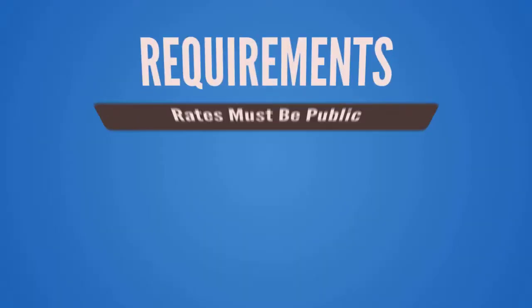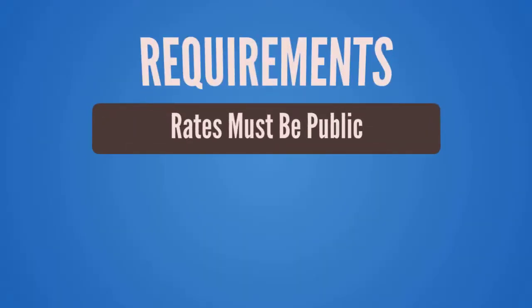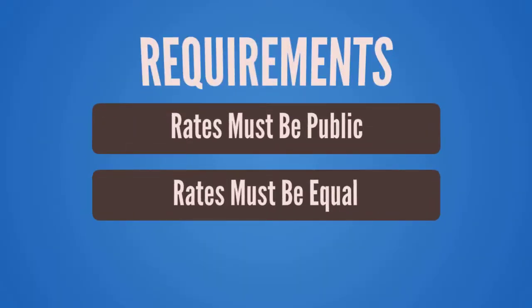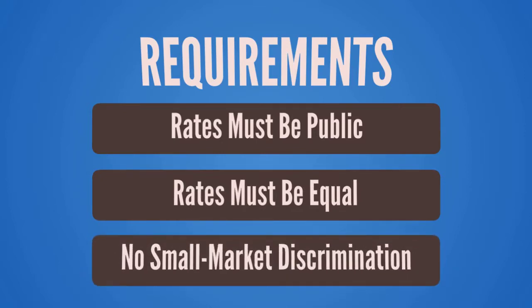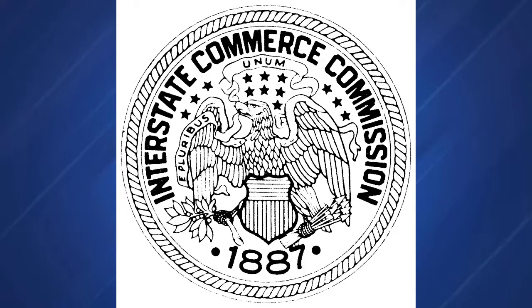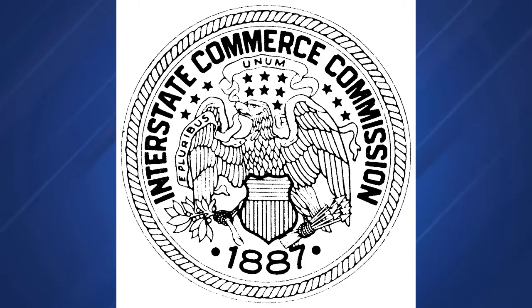The Interstate Commerce Act required that railroads publicize their shipping rates. It also required that railroads charge the same rates for short distance hauls as they did for long distance hauls, and to end price discrimination against smaller markets. To enforce these mandates, Congress created the Interstate Commerce Commission, the ICC, the nation's first regulatory agency.